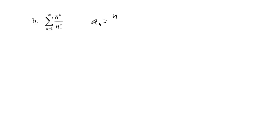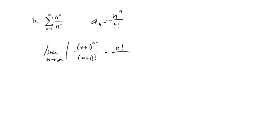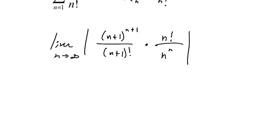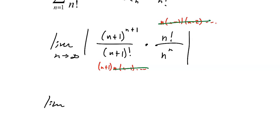Moving on — n^n and n factorial. I'll let a_n = n^n / n!. So I do the limit as n approaches infinity of the absolute value of a_(n+1) / a_n, which is (n+1)^(n+1) / (n+1)! times the reciprocal n! / n^n. Thinking about the factorials: since (n+1)! = (n+1) · n!, the n! terms divide out, leaving just (n+1) in the denominator.